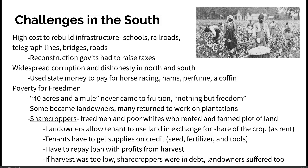There were a lot of challenges in the South even during Reconstruction. Rebuilding infrastructure — schools, railroads, telegraph lines, bridges, and roads — was very costly. Reconstruction governments had to raise taxes, which was a major burden for a community already struggling financially from the war. There was also widespread corruption and dishonesty in both the North and the South. New governments, even Republican ones, were using state money to pay for things like horse racing, hams, and perfume — things that had nothing to do with government — which turned a lot of people off to the political process.